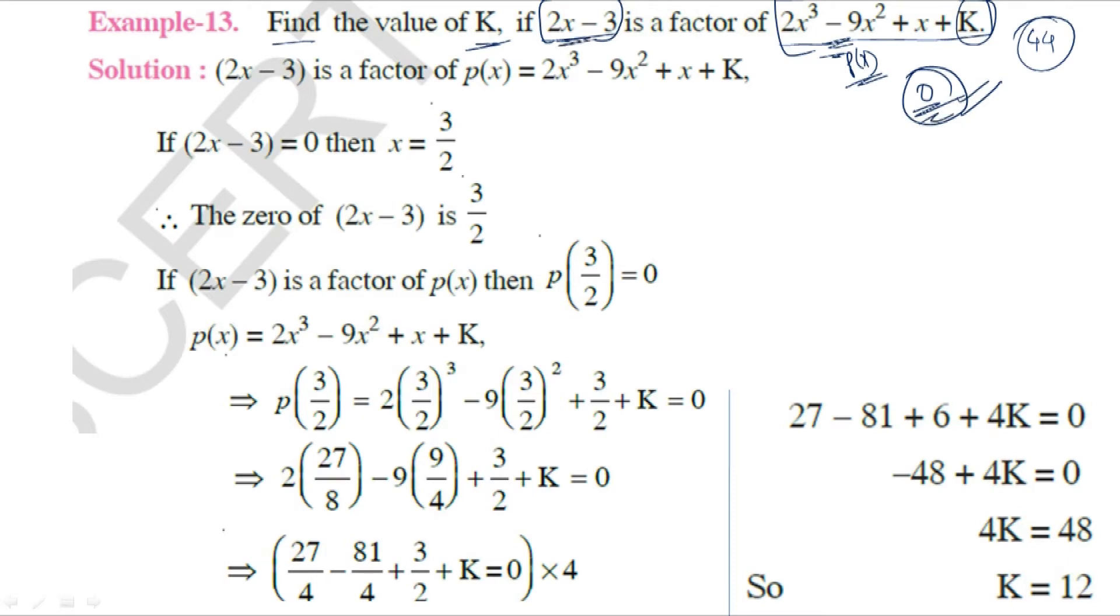We have a linear polynomial (2x - 3) that is a factor of P(x), where P(x) = 2x³ - 9x² + x + K.